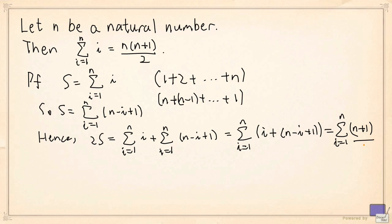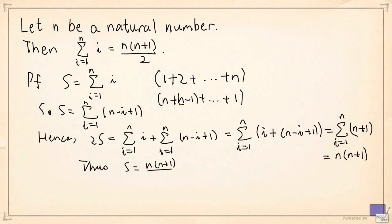But n plus 1 is just a constant for every term, and we have n terms. So this is equal to n times n plus 1. Thus, 2s equals n times n plus 1, and dividing both sides by 2, we get s equals n times n plus 1 divided by 2. And that proves the result.